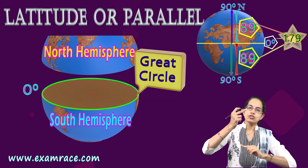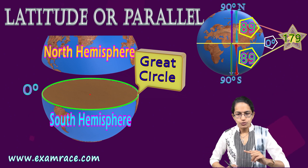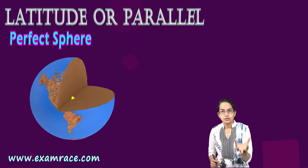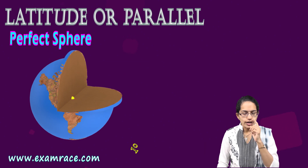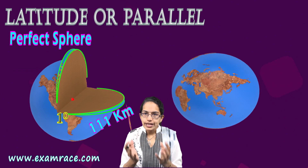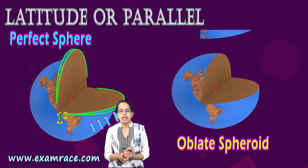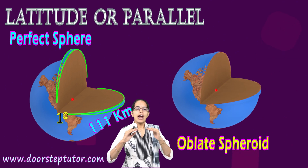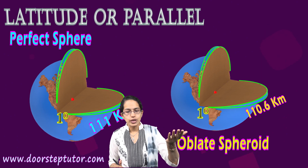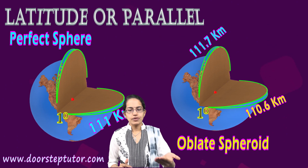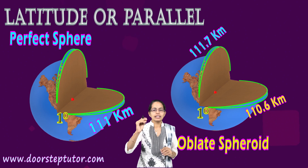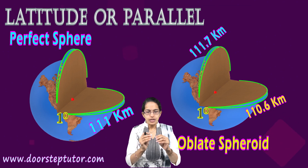The zero-degree line, or equator, is the great circle that demarcates the northern and southern hemispheres. If the earth were a perfect sphere, one degree of latitude would equal 111 kilometers. However, since the earth is an oblate spheroid, the length varies slightly: at the poles it is about 111.7 kilometers, and at the equator it is about 110.6 kilometers.